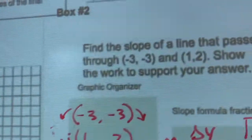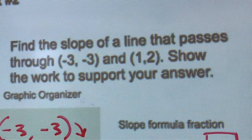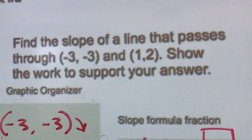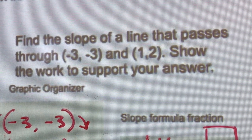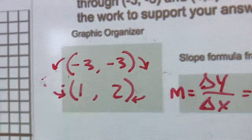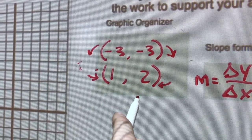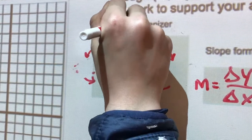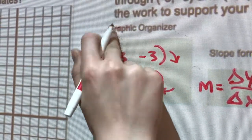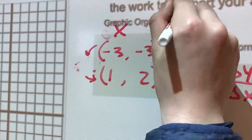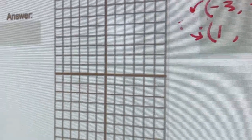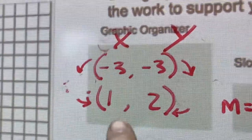Nicely done. Find the slope of a line that passes through (-3, 3) and (1, 2). Show the work to support your answer. So I put the coordinate, and then I put another coordinate under it. So this is my x, and this is my y.